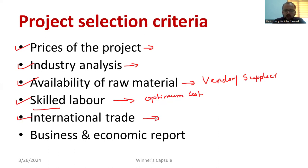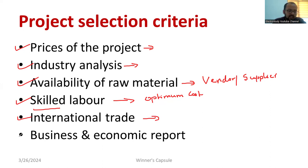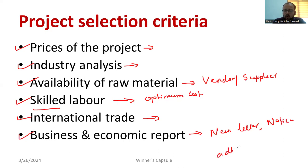Similarly, international trade — what about the geopolitics, barriers, and all the constraints you have to consider? How strong is the international diplomacy? What about the interaction of the government with other countries? That also matters. How is international business happening in the particular country? Similarly, business and economic reports — various newsletters, notices, and ads — all the things you have to consider before selecting a particular project for a particular industry.